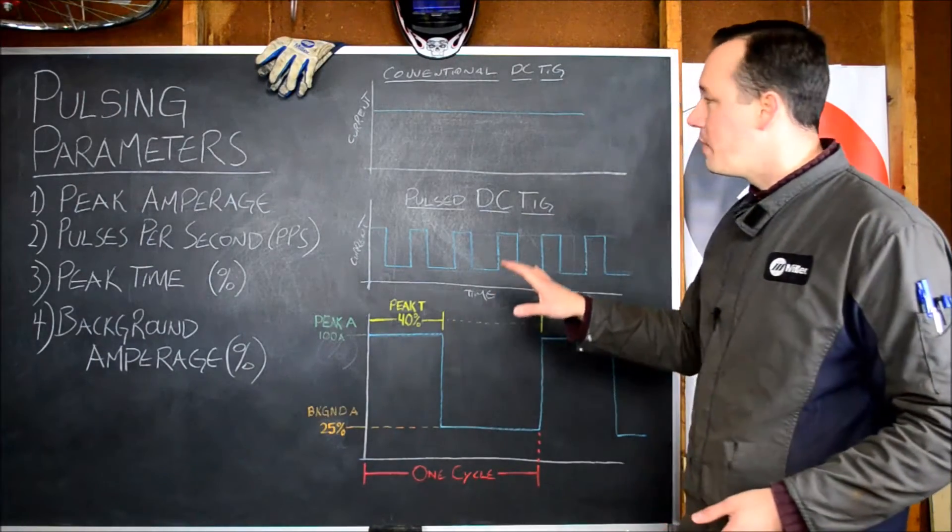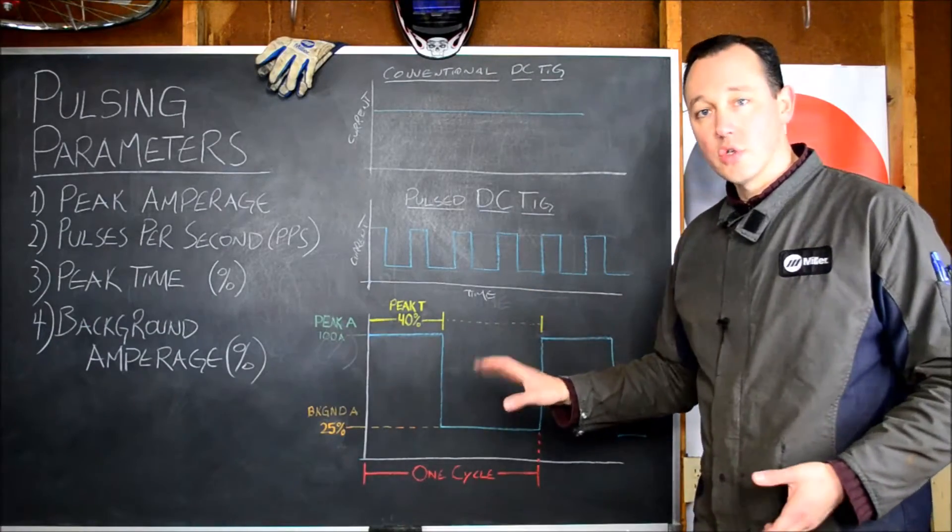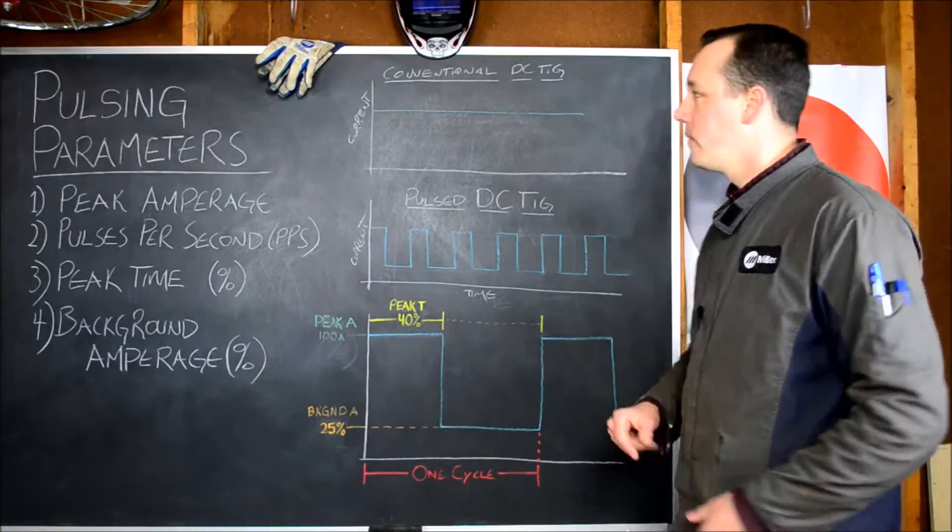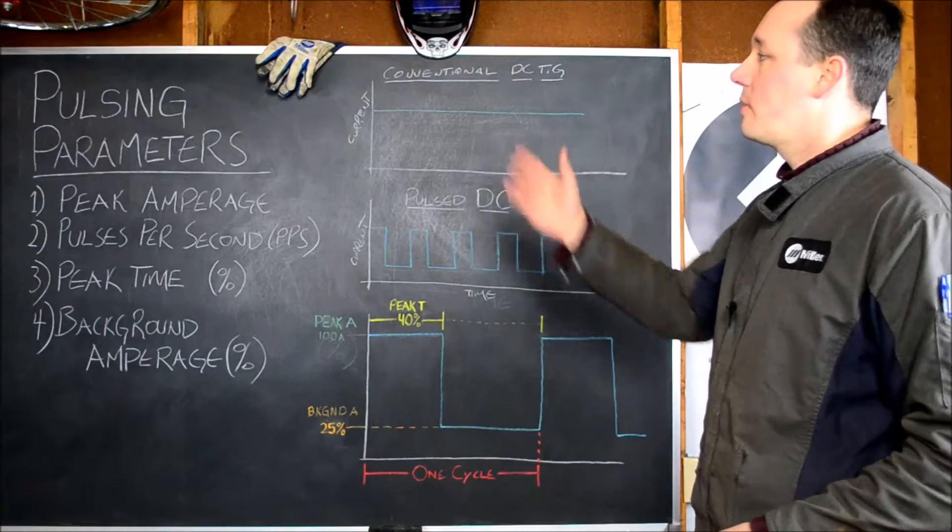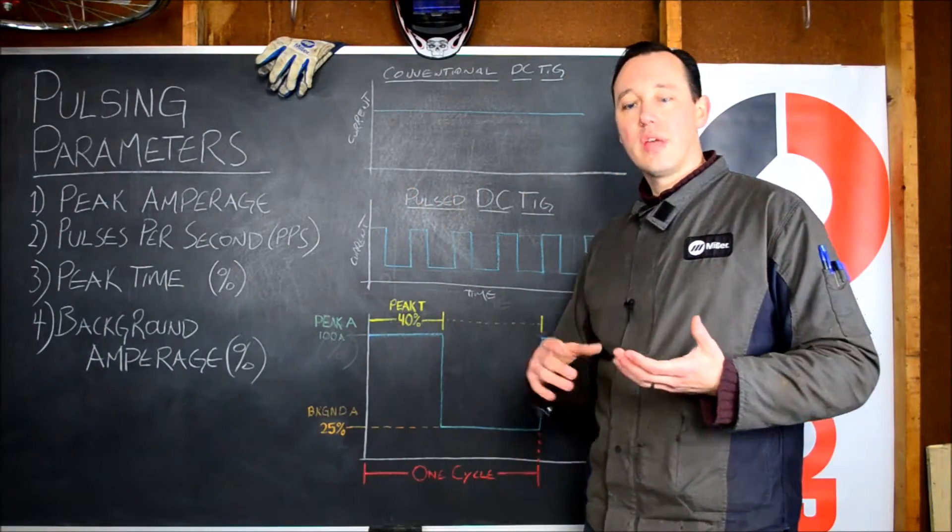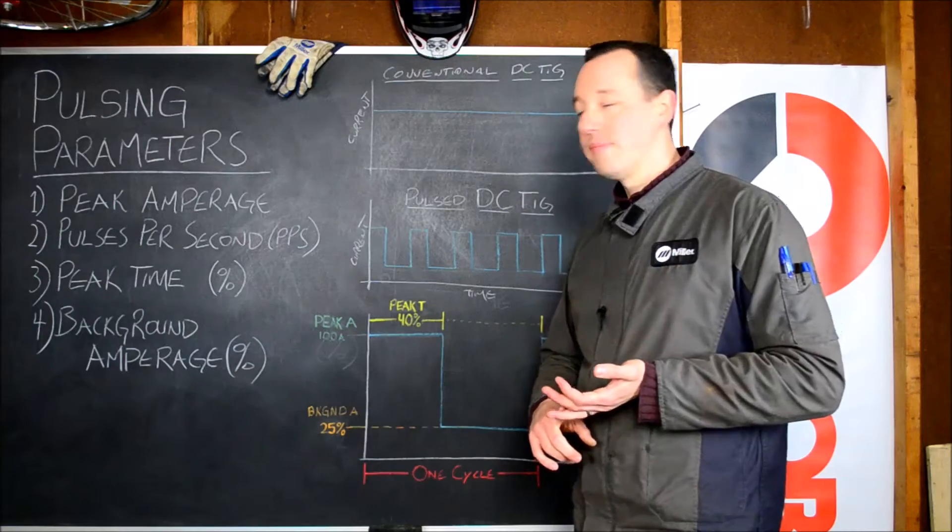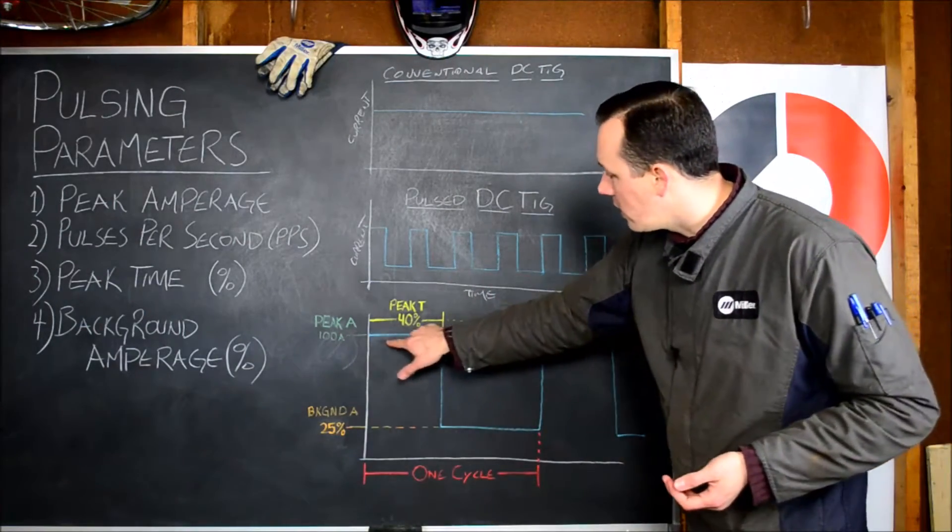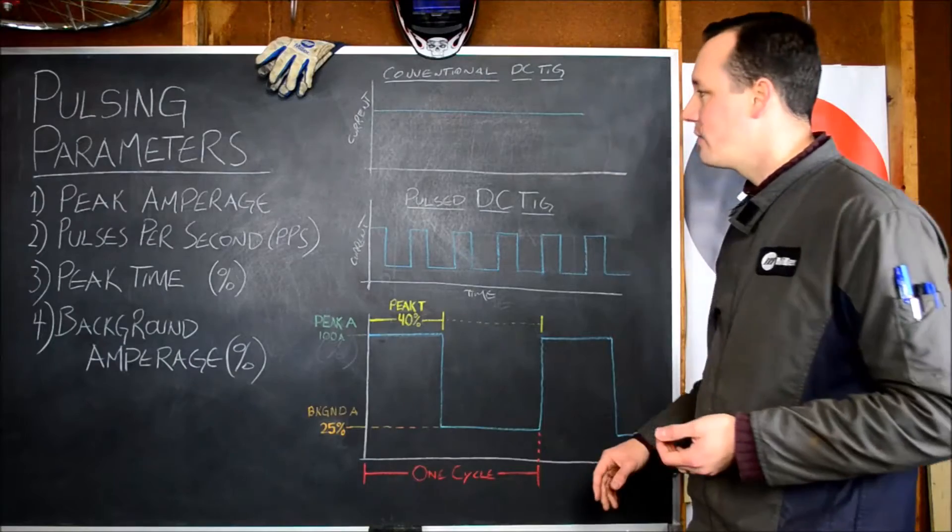Now when we're doing this, we've basically got four different things that we're controlling on the machine. So those are our main pulsing parameters. Number one is peak amperage. This is simply the amperage that you're setting on the front panel of the machine. So that is right here. Say 100 amps on this colorful graph here.